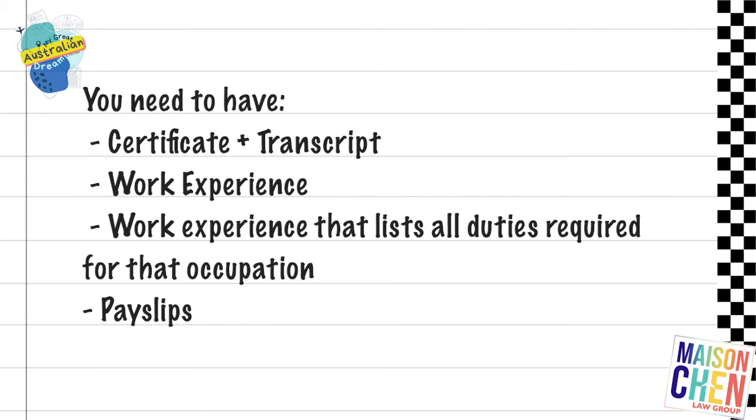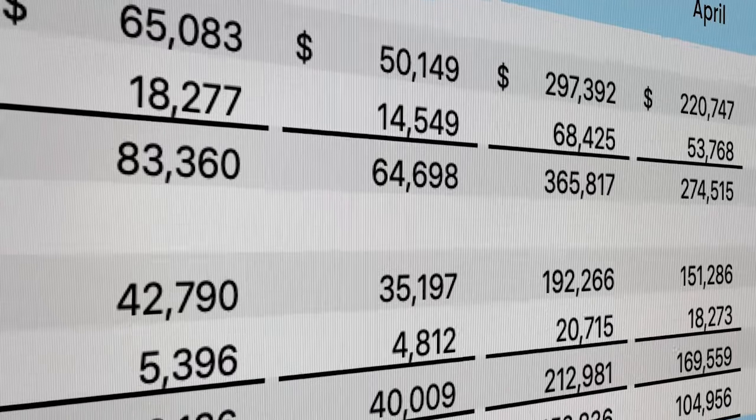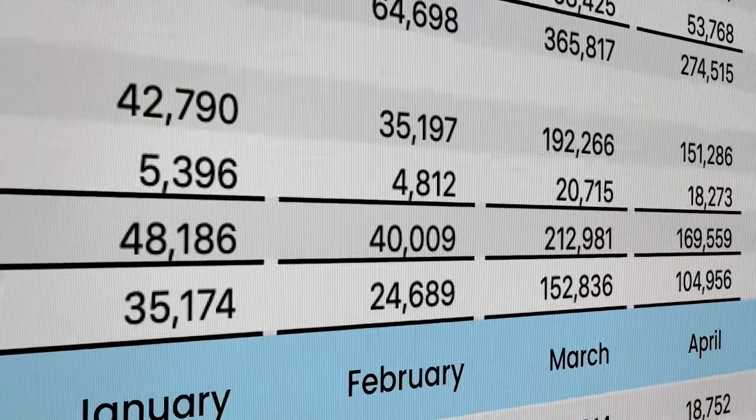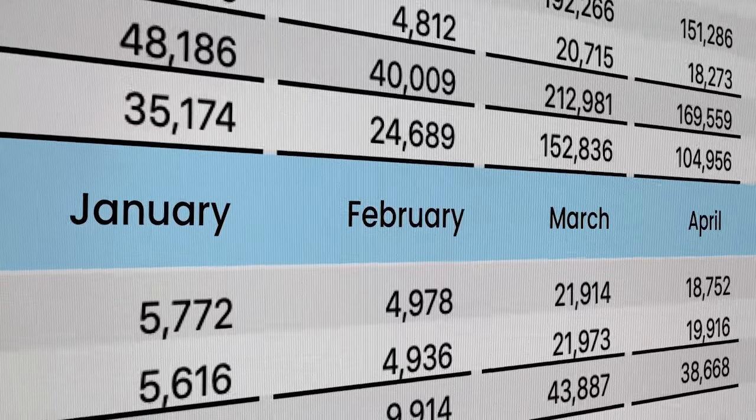You need to have pay slips, and they usually ask for all pay slips, which can be quite difficult when you have years and years of experience. It's manageable if you just have one year of work experience, but if you have like 10 years, it gets a bit tricky. You need proof of the pay slips and how they were paid, so you must have bank statements, superannuation, and tax documents. With the work experience, it does not need to be full time — 20 hours per week will be fine.